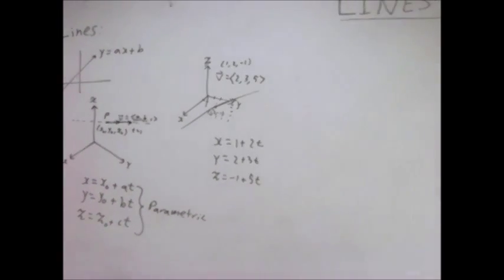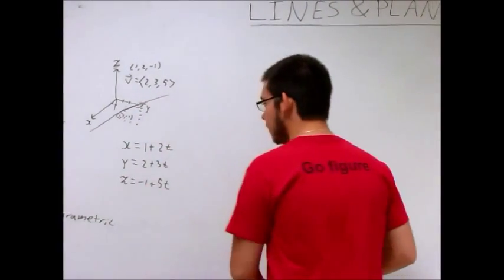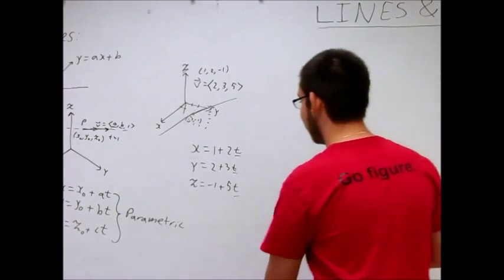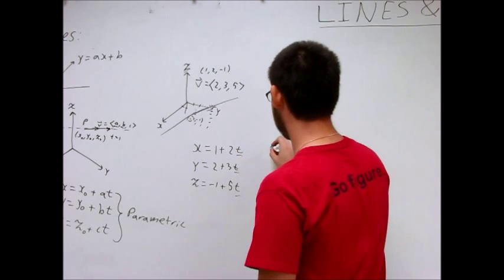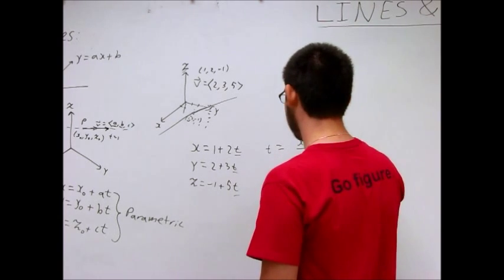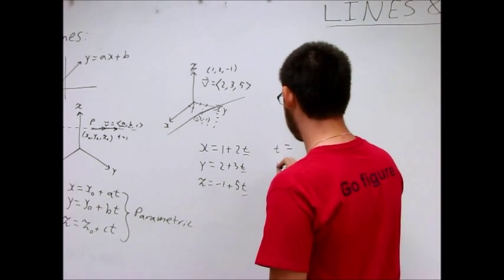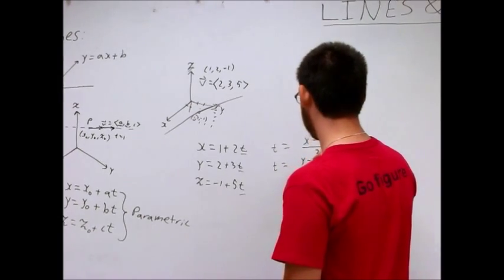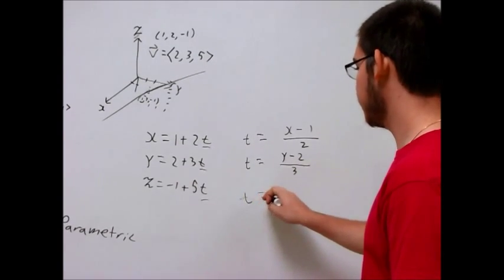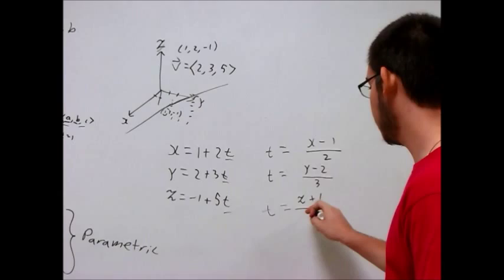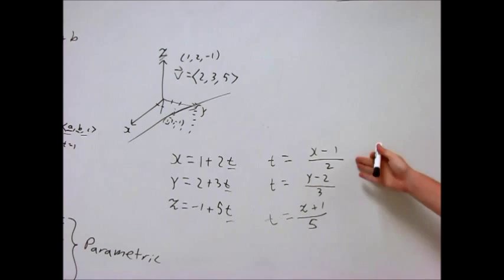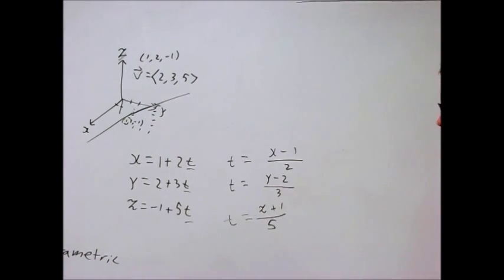But there is another way to express lines. And that is, if you solve for t in these equations, you'll see that in this one we say t equals, we'll bring that 1 over x minus 1 over 2. In this case, t equals y minus 2 over 3. And this one, t equals z plus 1 over 5. And since, of course, t equals itself, we can set all of these equal to each other. To get what's called a symmetric form.